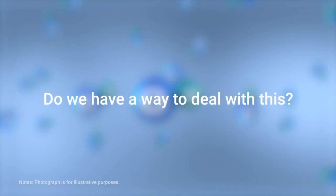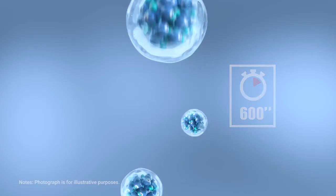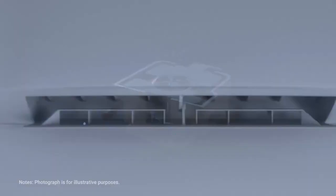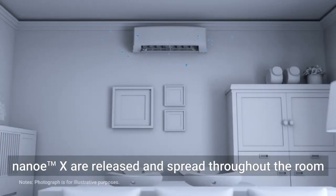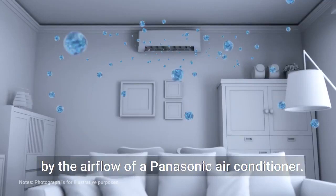Nano-EX collects invisible moisture in the air and applies high voltage to it, generating huge volumes of hydroxyl radicals contained in water. Nano-EX are released and spread throughout the room by the airflow of a Panasonic air conditioner. Nano-EX particles are huge numbers of hydroxyl radicals contained in water.